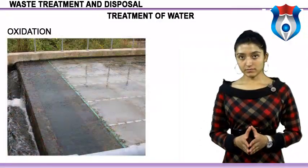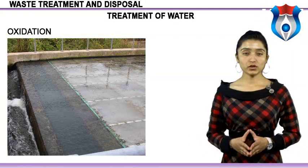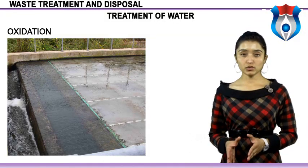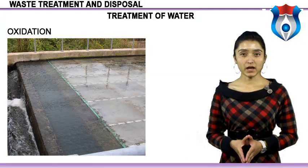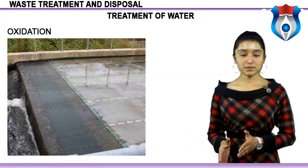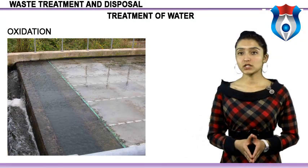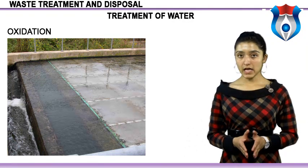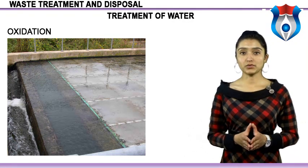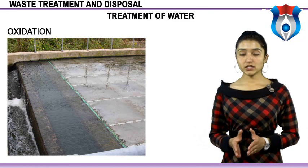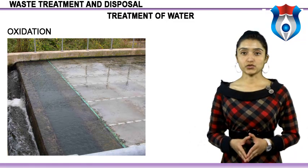Oxidation: dissolved hydrocarbons can also be destroyed through oxidation. Ozone, peroxide, chlorine, or permanganate have been tested and found effective; however, oxidation normally must be conducted at high temperatures or with ultraviolet irradiation. Oxidation is not practical for most oil field applications.